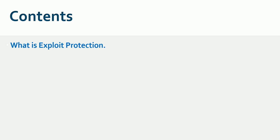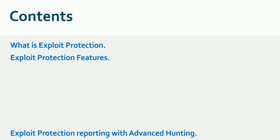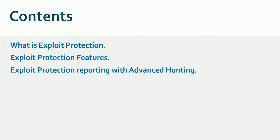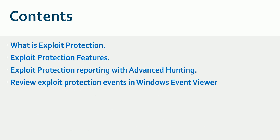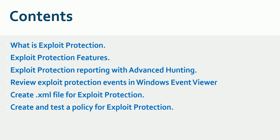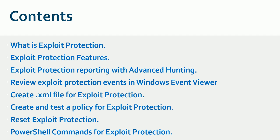Here is the content we are going to cover: what is exploit protection, exploit protection features, exploit protection reporting, advanced hunting to review exploit protection events in the Windows Event Viewer, how to create an XML file for exploit protection, create a test policy, reset exploit protection policy, and finally some PowerShell commands explanation.